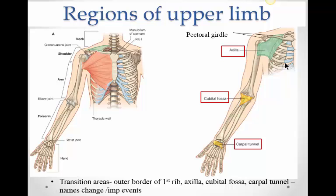Let's look at the regions of the upper limb. When you say 'arm' in general English, you could mean anything from the actual arm between the shoulder and elbow, to the forearm. In anatomy, the arm is also known as the brachial region — you'll find the word 'brachial' used to describe anything in that area. This is the forearm, this is the hand, this part here is the shoulder, and the armpit area is known as the axilla.